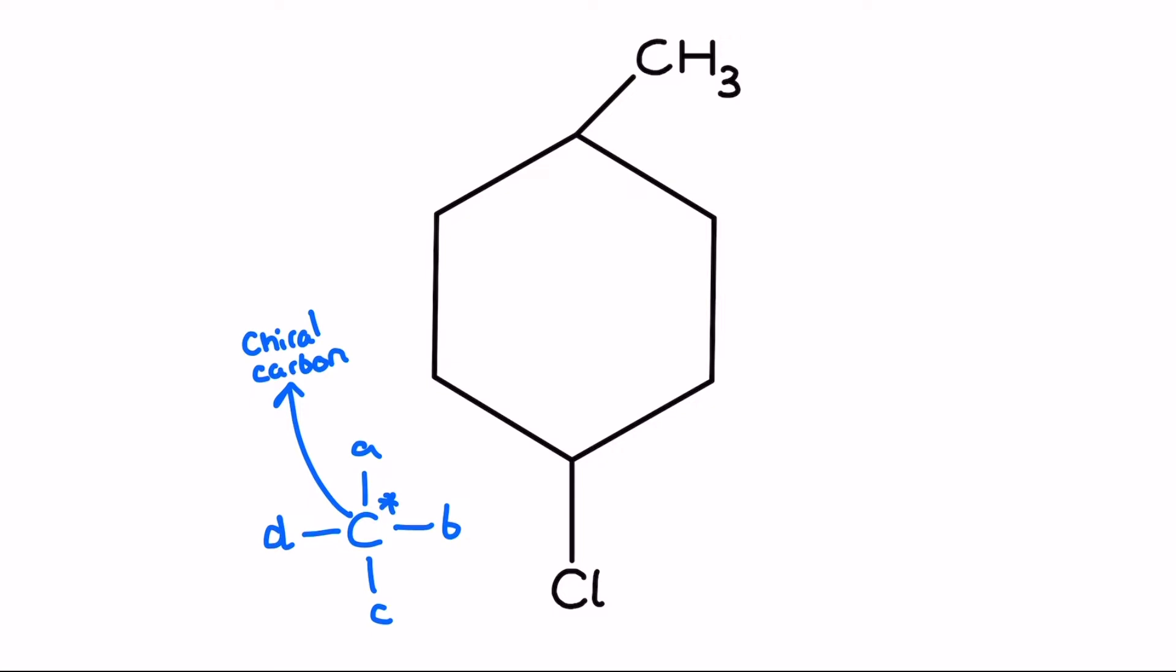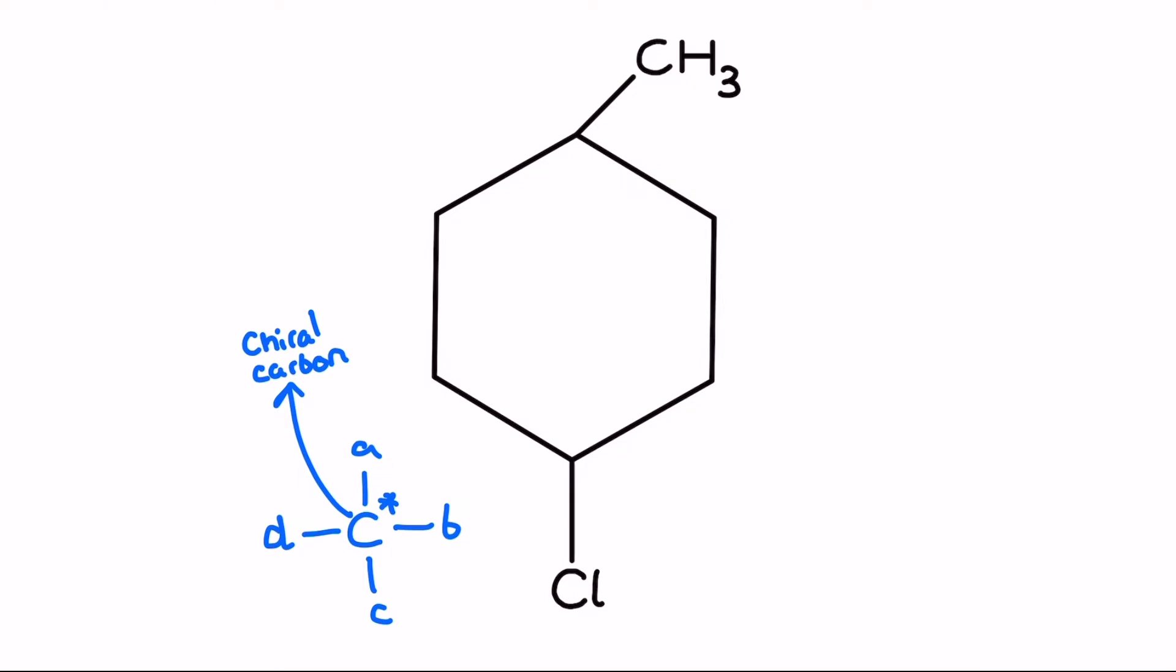So let's take a look at what you need. I'm using this example here with a CH3 group at the top and a CCL bond right at the bottom across from it, and we're going to study to see first off if this particular allocyclic structure contains a chiral carbon.